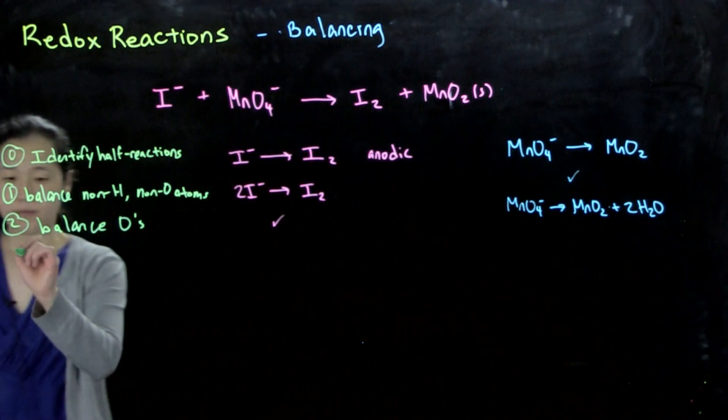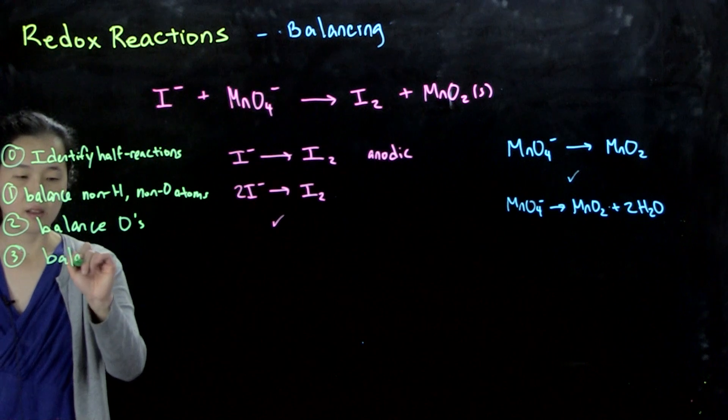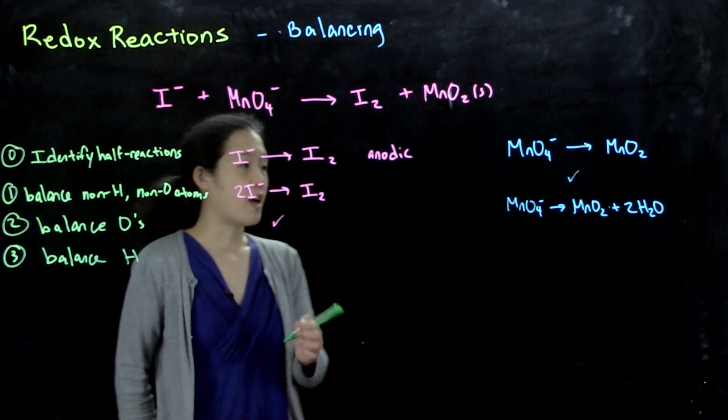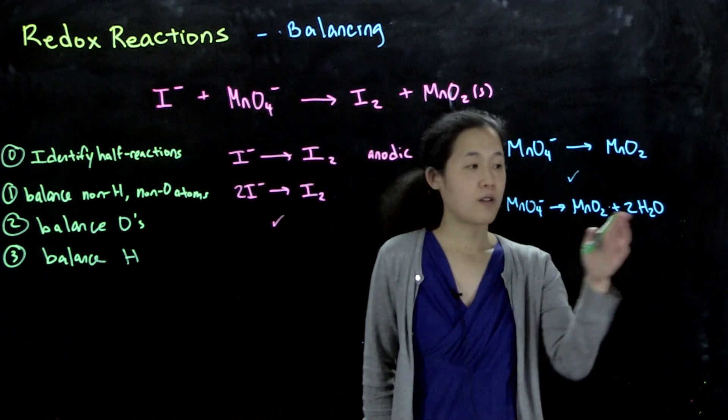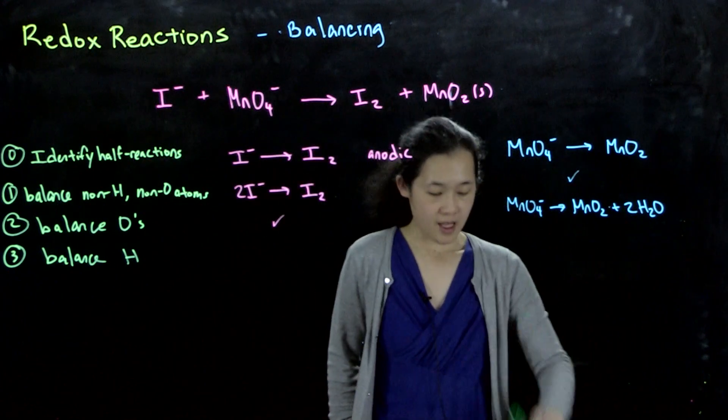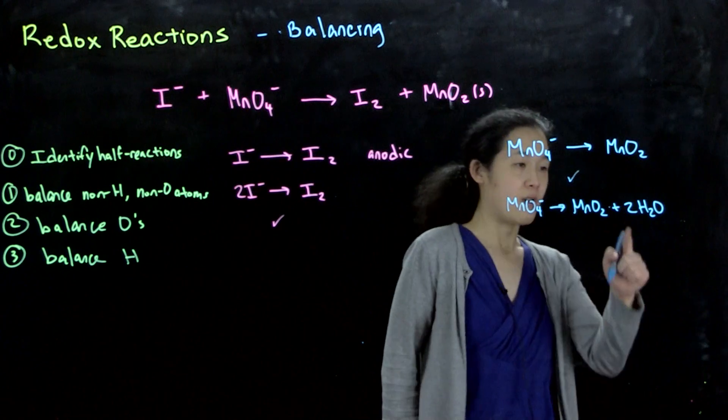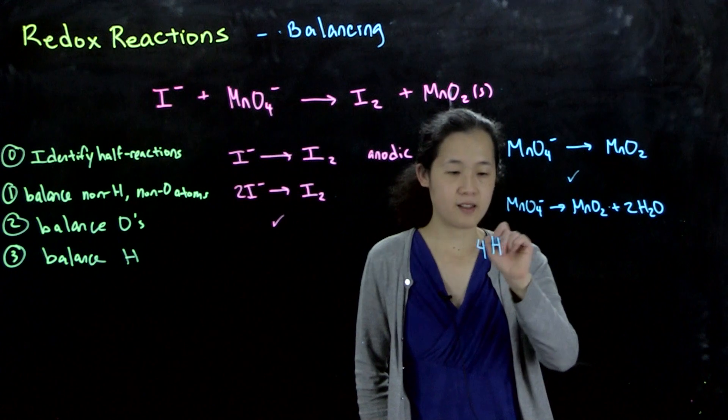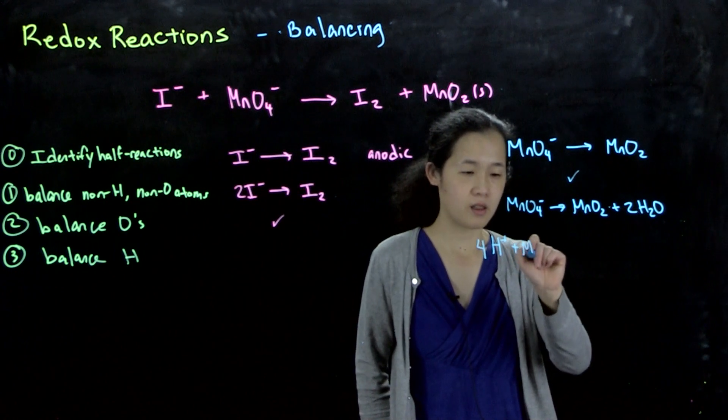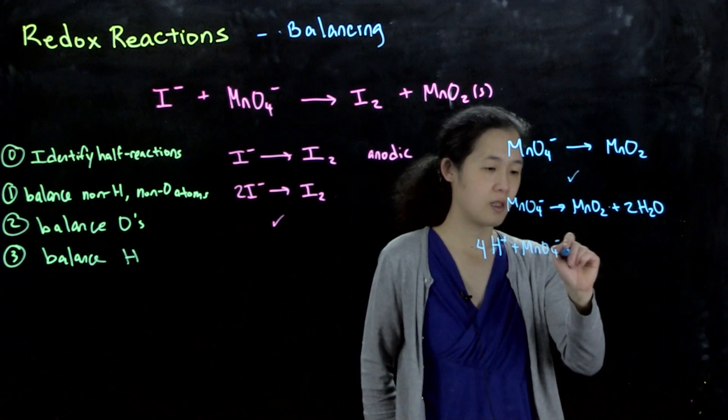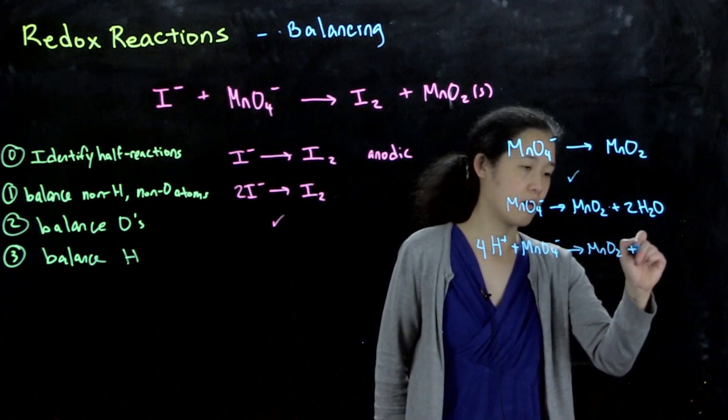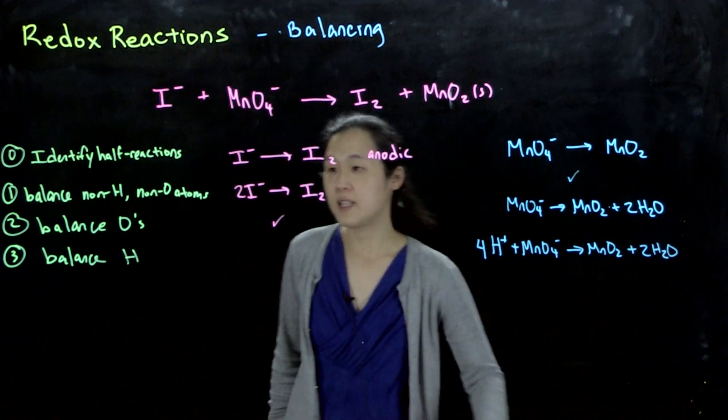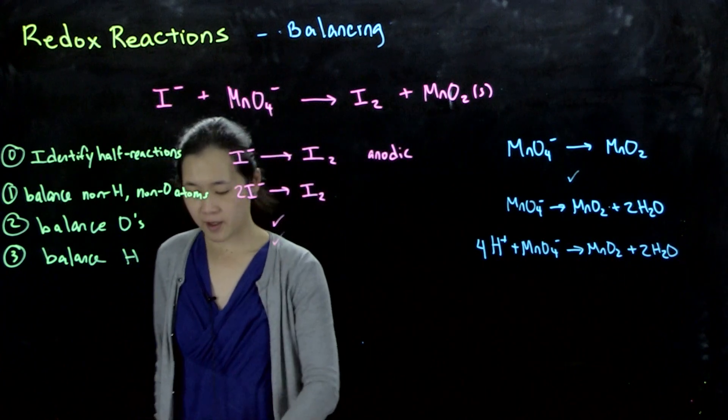Step three: then we balance out protons, and we balance protons by adding protons to the left side. Here we have extra H's. We have four extra H's, so what we do is we add four protons (4H⁺) on the left side. This iodide has no oxygens or H's, so we keep on going.